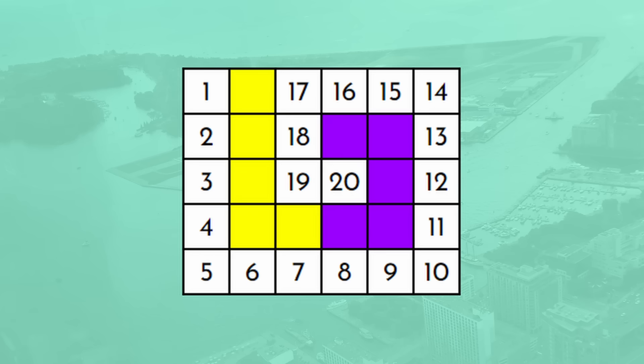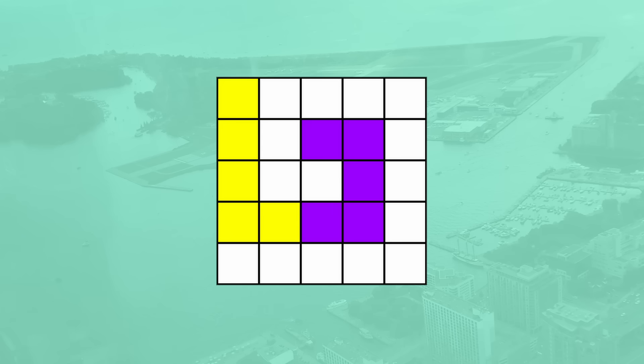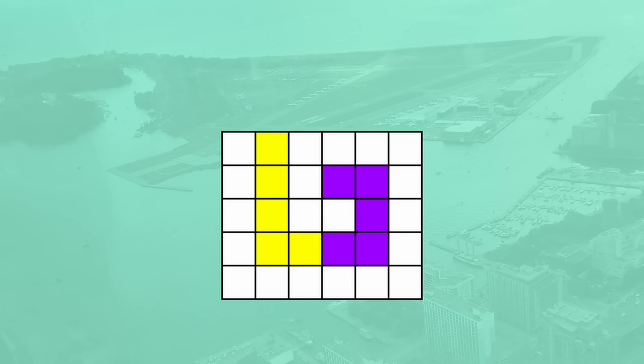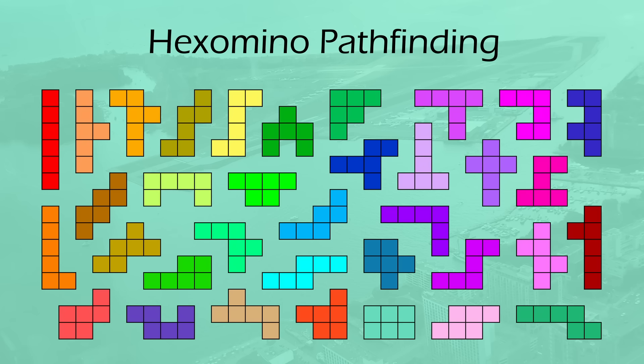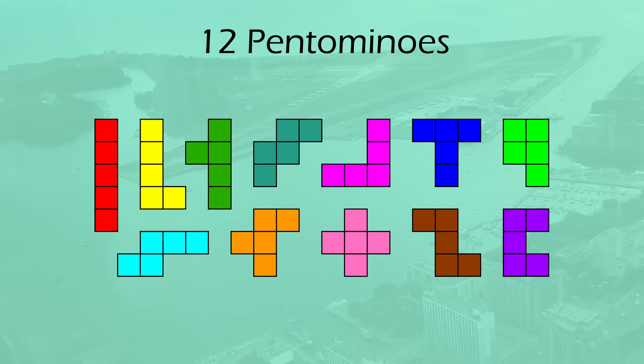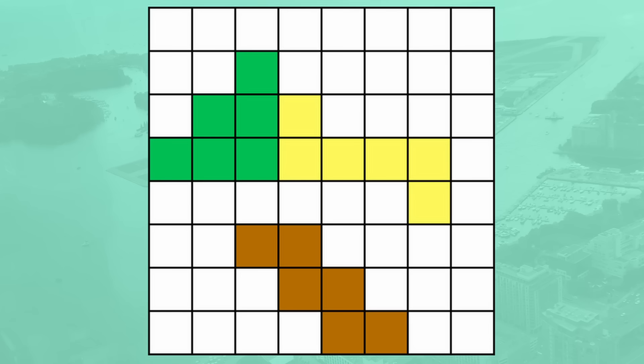The last rectangular board size I want to talk about is the 5x6, because it takes that really cool 5x5 solution from the last video and extends the spiral into one side. In fact, on the 6x7, you can extend it even more by placing the I pentomino. Moving on — and now onto hexomino pathfinding. While there's only 12 pentominos, there's a total of 35 hexominoes, which means there are many more possibilities for each board.